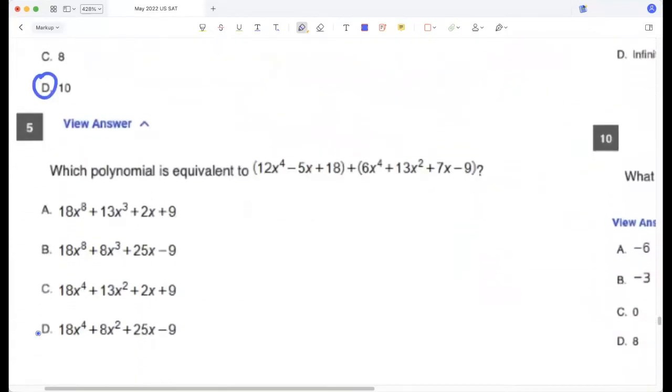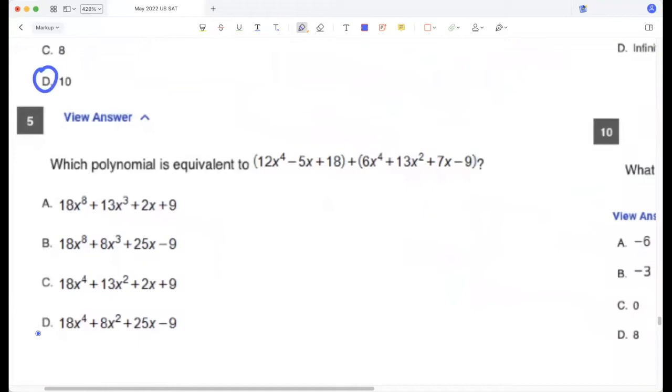Which polynomial is equivalent to this? 12x to the power of 4 plus 6 is 18x to the power of 4. So A and B are out. Then you have 13x squared. Yeah, this 13x squared, then minus 5x plus 7x is plus 2x. 18x minus 9 is 9.